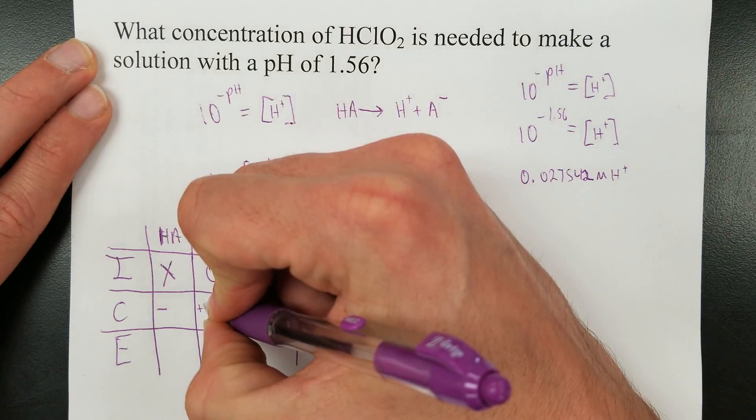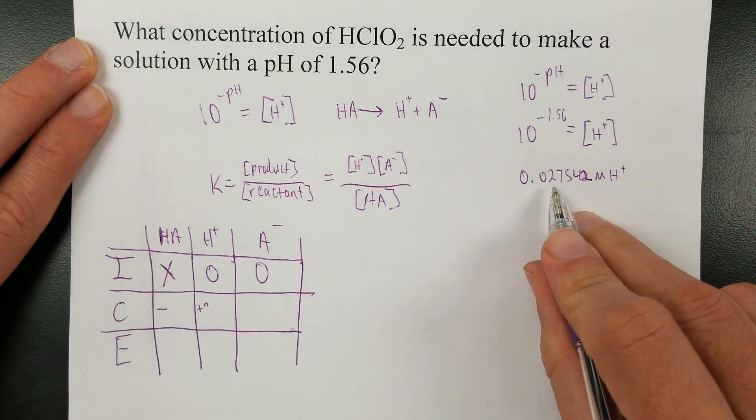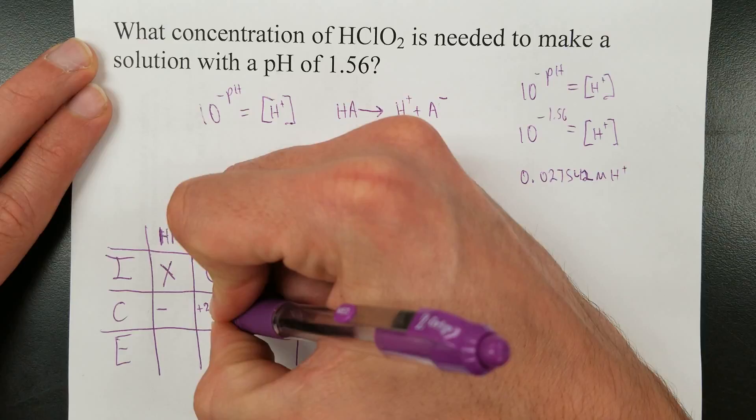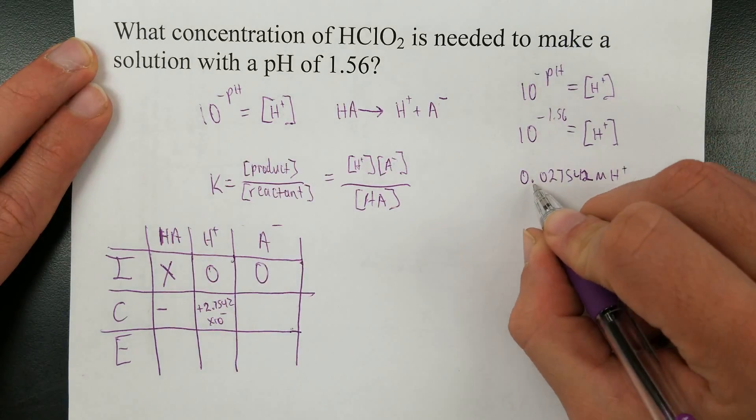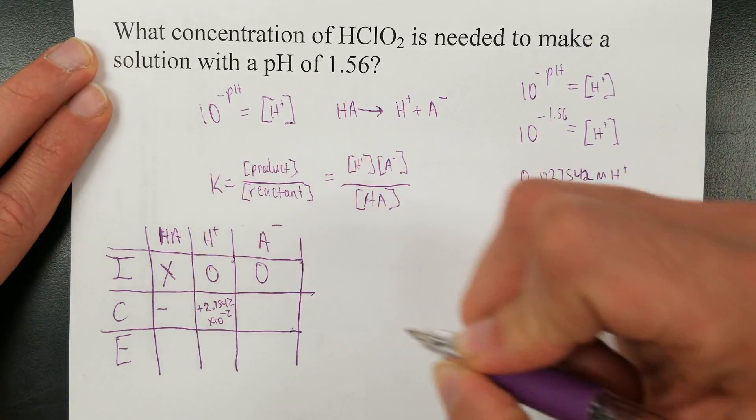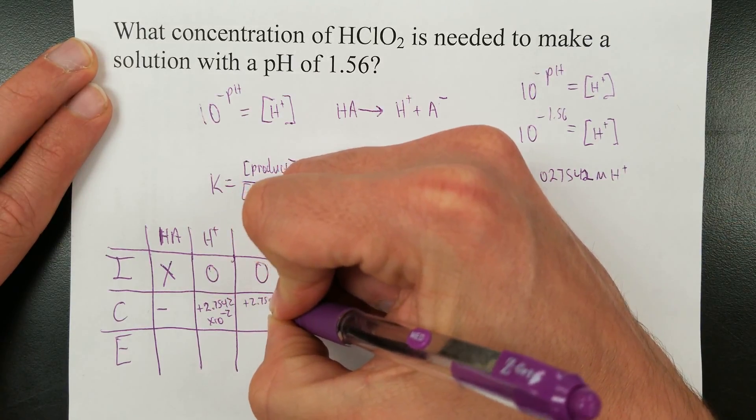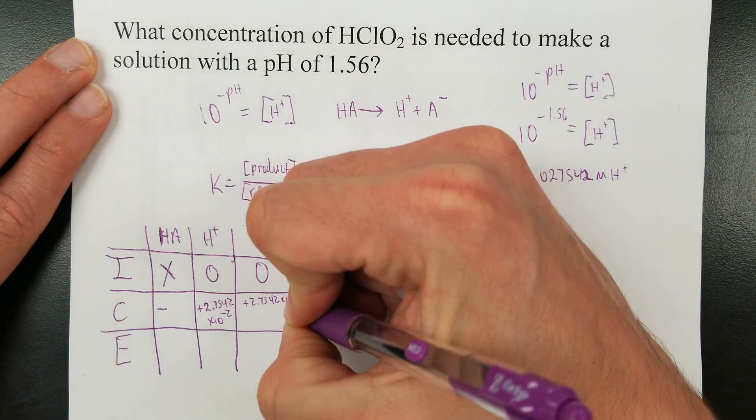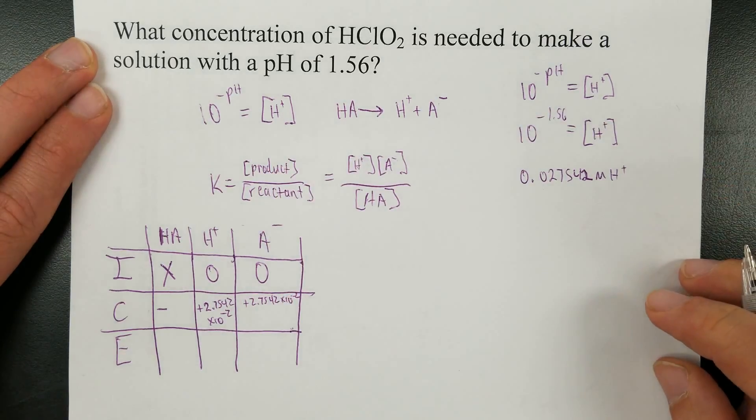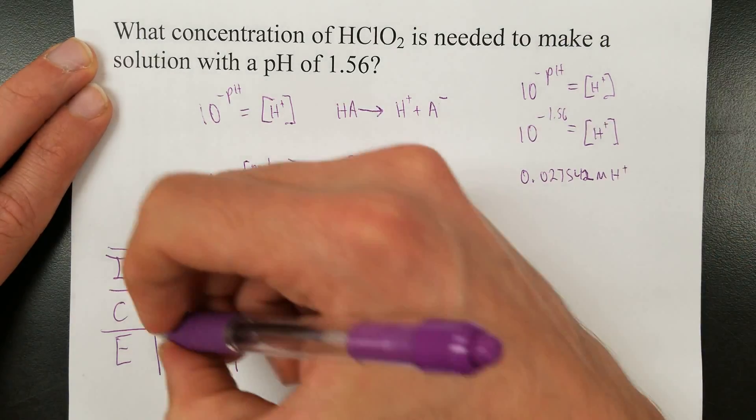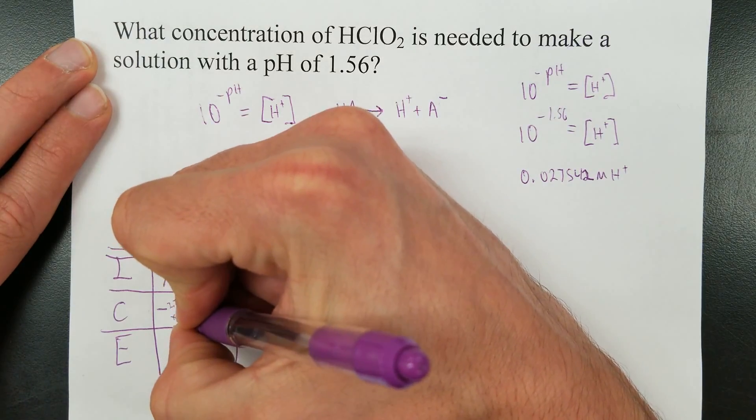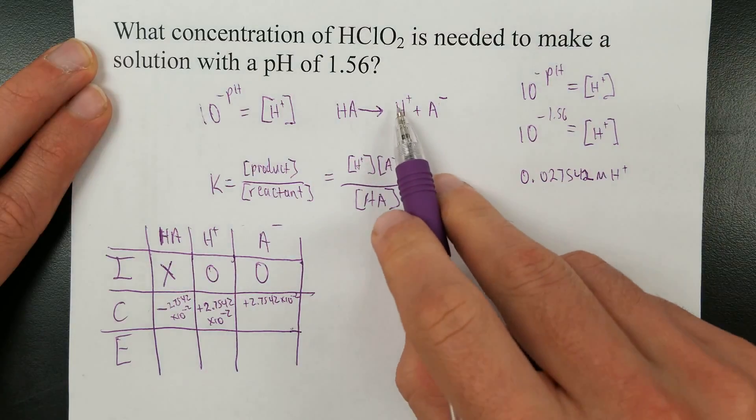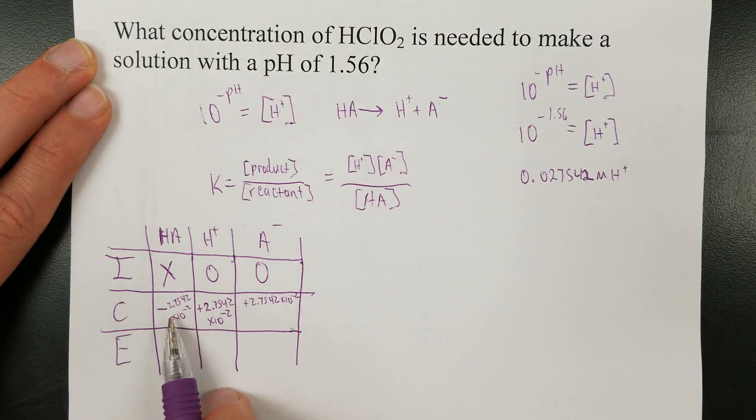So plus, let's see, what is this? 2.7542 times 10 to the negative 2nd. Plus 2.7542 times 10 to the negative 2nd. Minus 2.7542 times 10 to the negative 2nd. Remember, for every one of these that you gain, you lose one of these. So that's why these numbers are the same, just losing and gaining.